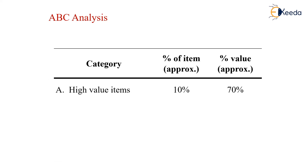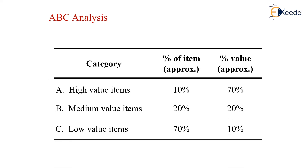For example, high value items constitute 10 percent of items and 70 percent of value. Medium value items are 20 percent of items and 20 percent of value. Low value items are 70 percent of items and 10 percent of value.